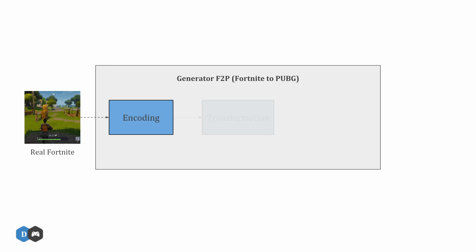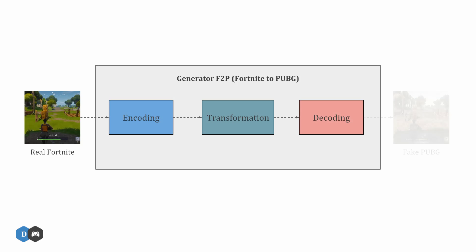The generator network used here is made up of three major convolution blocks. The first finds an encoding of the Fortnite screenshot in a lower-dimensional latent space. This encoding is then transformed into an encoding that represents PUBG in that same latent space. The decoder then constructs the output image from the transformed encoding, giving us a Fortnite image that looks like PUBG.